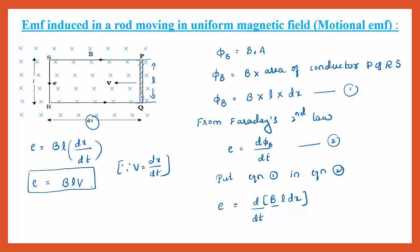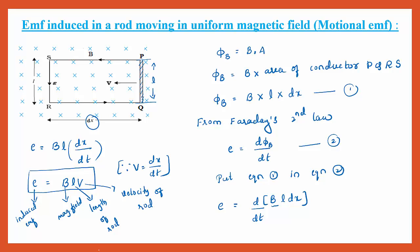E = BLV is the expression for motional EMF, and this equation is very important for solving numerical problems. Here E is the induced EMF in the conductor, B is the magnetic field, L is the length of the rod, and V is the velocity of the conductor. The induced EMF depends on three factors: magnetic field, length of the rod, and velocity of the rod.